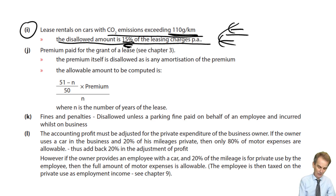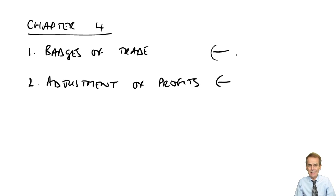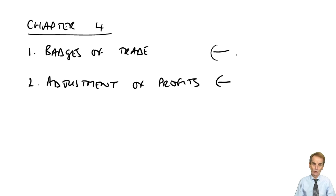Also check through the first issue in the notes — something called badges of trade. All that is, is how do we define what is income and therefore assessable as trading profits? And how do we maybe establish a capital gain — a profit made on the disposal of a capital asset that should be treated as capital gains tax rather than income tax?